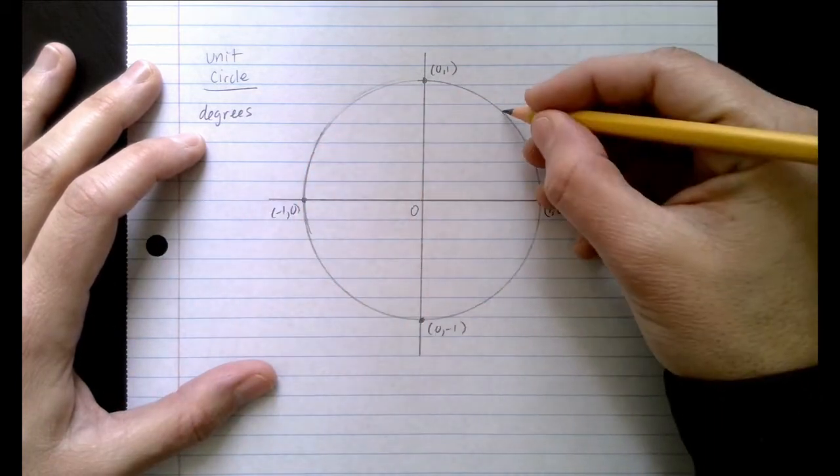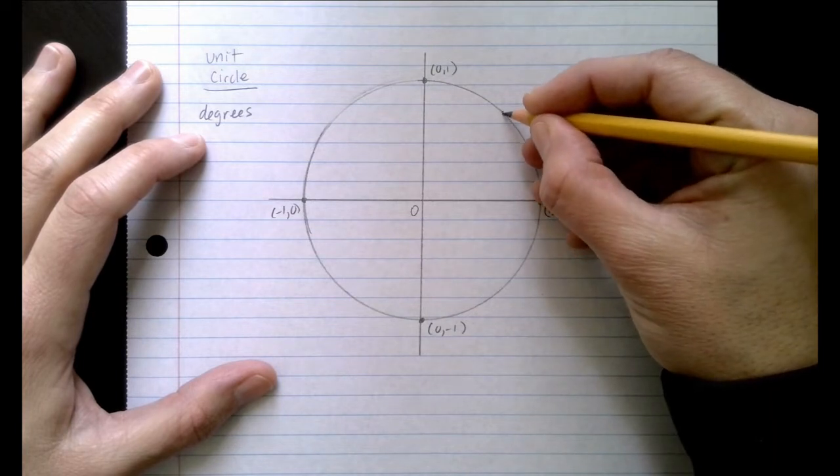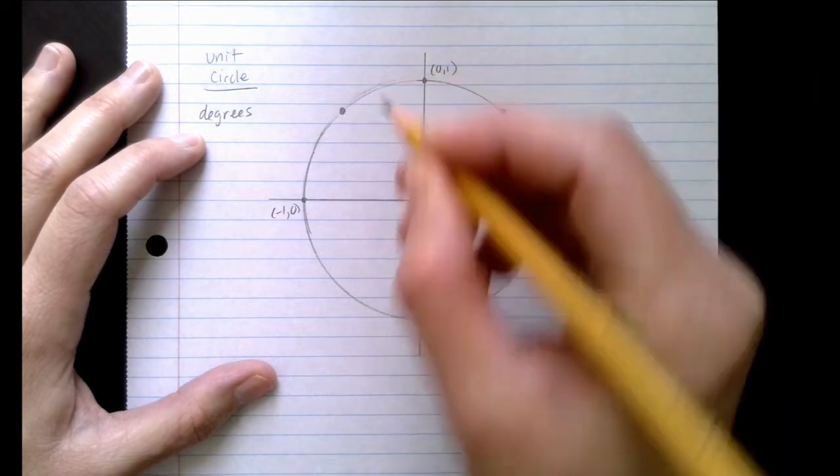So here's what I want you to do. First of all, we're going to look at the halfway point in the first quadrant, and actually in each one thereafter. So put a point there.